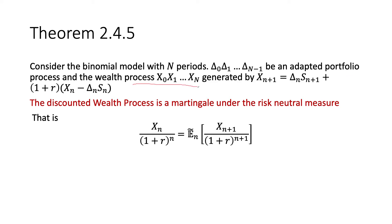The wealth process starts with initial wealth X0 and changes as time goes by. At time n, if we buy Δ_n shares of the stock, then at time n+1 the stock price moves to S_{n+1}, so the value of our stock holding is Δ_n × S_{n+1}. We started with X_n dollars, spent Δ_n × S_n to buy the shares, and invested the remainder in the money market earning (1+r). This is the wealth process.